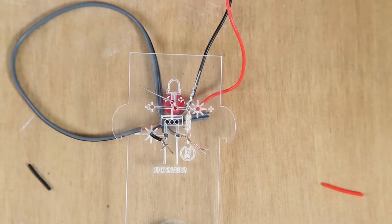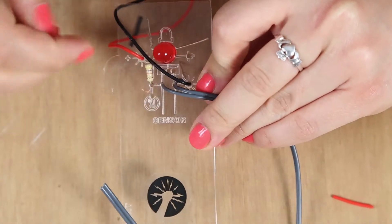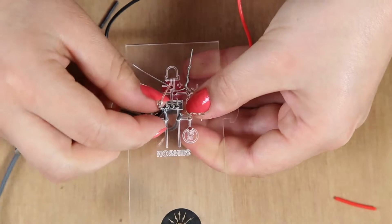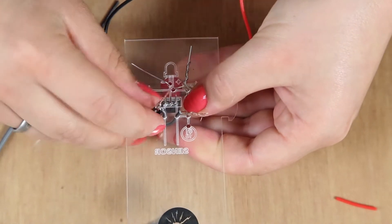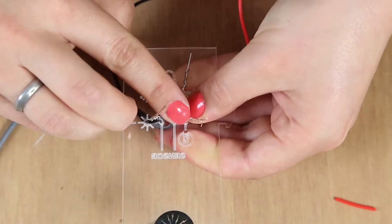And the last component is the MOSFET. We want to make sure that the metal is going against the LED. And we want to bend the left leg down, the middle leg up and the right leg down.